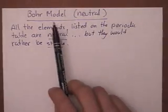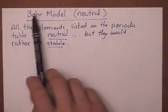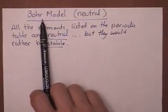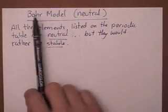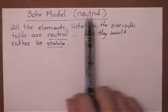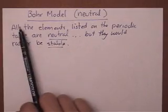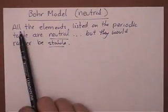Okay, let's start off by doing a Bohr model here. We're going to use the Bohr model, which is just a diagram that represents the structure of the atom, to show how all the elements in the periodic table are neutral. I've written it down here for you already to save some time.